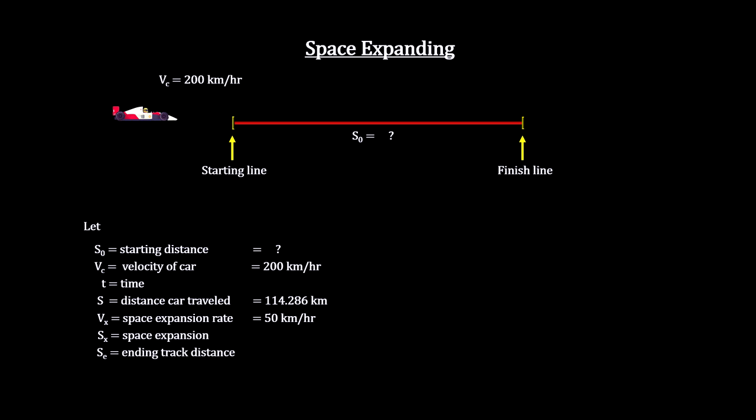Now suppose we didn't know the track's distance at the start, but we did know how fast the car travels and the car's odometer tells us how far it traveled. And furthermore, suppose we found a way to figure out that space was expanding at 50 kilometers per hour.